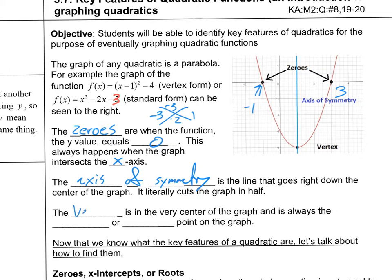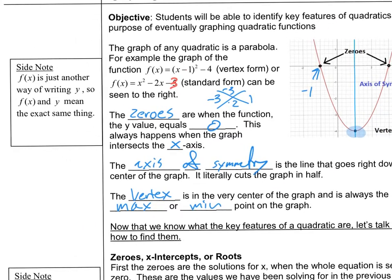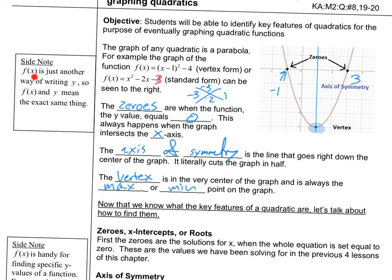The vertex is in the very center of the graph and is always the maximum or minimum point. If the parabola opens up, the vertex is the minimum; if it opens down, it's the maximum. Also remember, f(x) is just another way of writing y — they mean the same thing, it's just more proper notation.